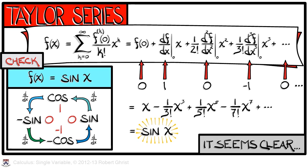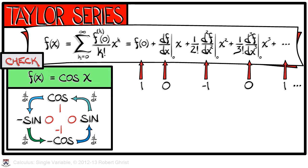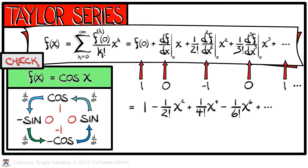It seems clear that this ought to work in other contexts as well. For example, if we work with cosine of x, the derivatives of cosine follow the same pattern as before. But when we evaluate those derivatives at 0, the sequence of numbers is shifted. f at 0 — that is cosine of 0 — is 1. The derivative at 0 is 0, then negative 1, 0, 1, and the pattern continues. When we simplify this expression, we see that all of the odd degree terms have 0 coefficients, leaving us with only the even degree terms in this series, and with the now familiar alternating signs, giving us our familiar expression for cosine of x.